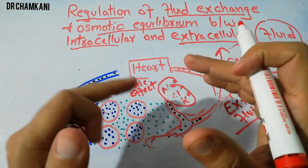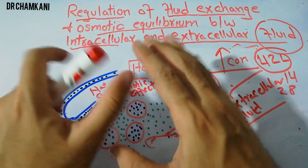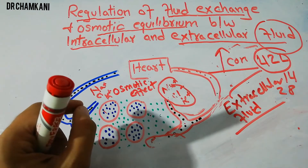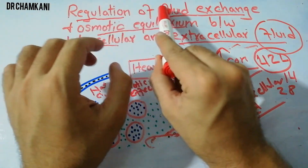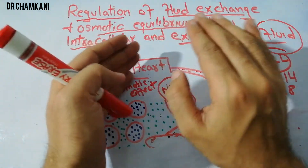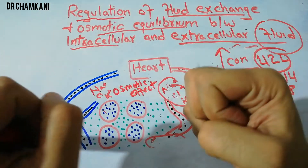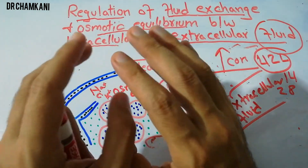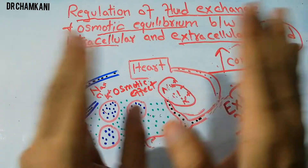Kidneys are very much involved in fluid exchange and we are going to discuss it in detail in coming lectures. This exchange at the cellular level and the maintenance of a fixed amount of fluid in the interstitium, the plasma, and inside the cells is basically maintained with the help of these forces which we have discussed in detail. That is how the regulation of fluid exchange and the osmotic equilibrium is maintained between the intracellular and the extracellular fluid.